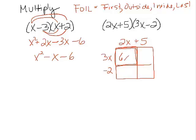Well, that area would be 6x squared. This box's area here would be 15x, since its width is 5 and its height is 3x. This one here would be negative 4x, and this one would be negative 10.